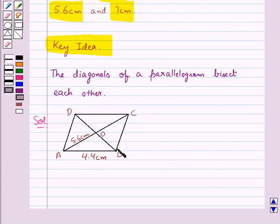Diagonal BD of measure 7 cm. So we have AB equal to 4.4 cm, diagonal AC equal to 5.6 cm.